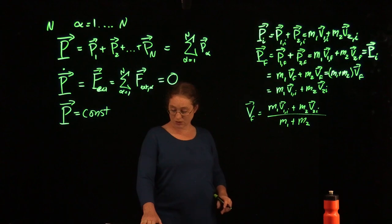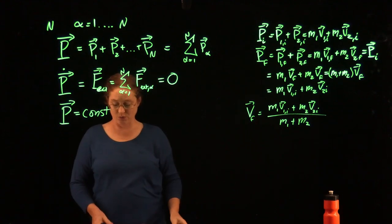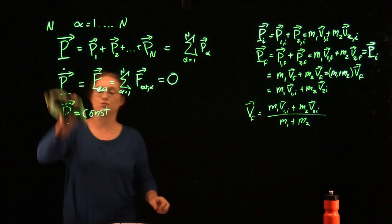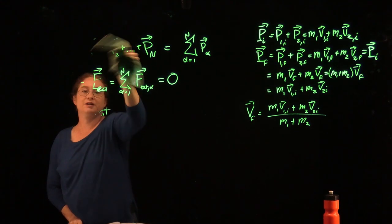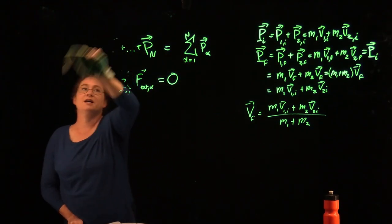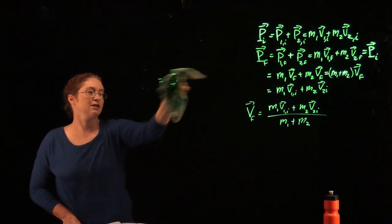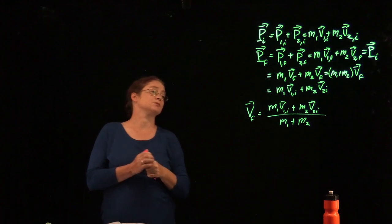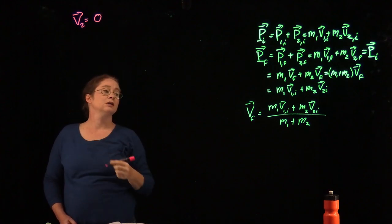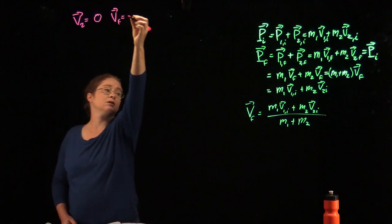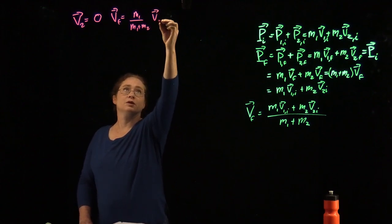The final velocity is m1 v1 initial plus m2 v2 initial over m1 plus m2. We're going to consider the case where one of the initial objects is at rest — like billiard balls or air carts on an air track. For the special case where v2 equals 0, v final equals m1 over m1 plus m2 times v1 initial.